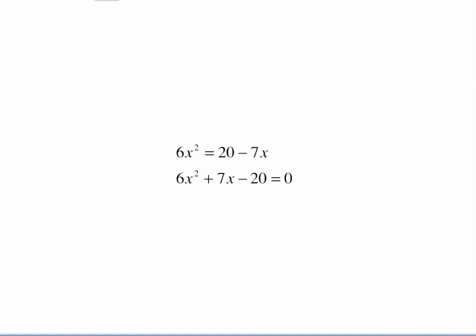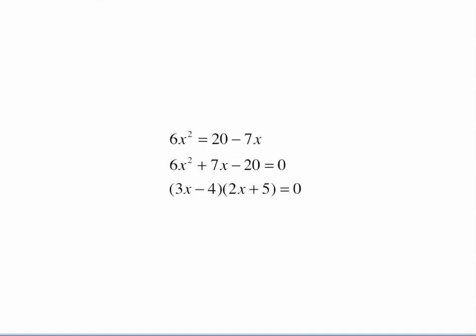You could pause and see if you could factor this on your own before you continue. And the way this will factor is 3x minus 4 times 2x plus 5. That will check out and give you the positive 7x in the middle. Once it's factored equal to 0, set that equal to 0, set that equal to 0, which is shown here.